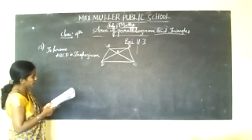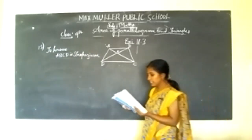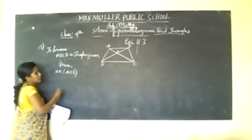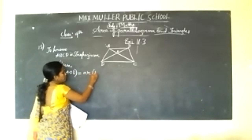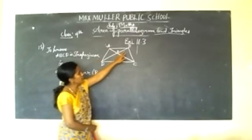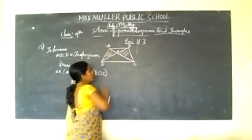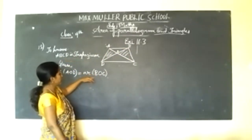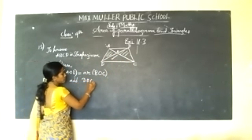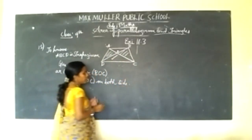Given that the two diagonals AC and BD intersect at O, and the given areas are equal — area of AOD equals area of BOC. To prove ABCD is a trapezium, we add area of DOC to both sides.